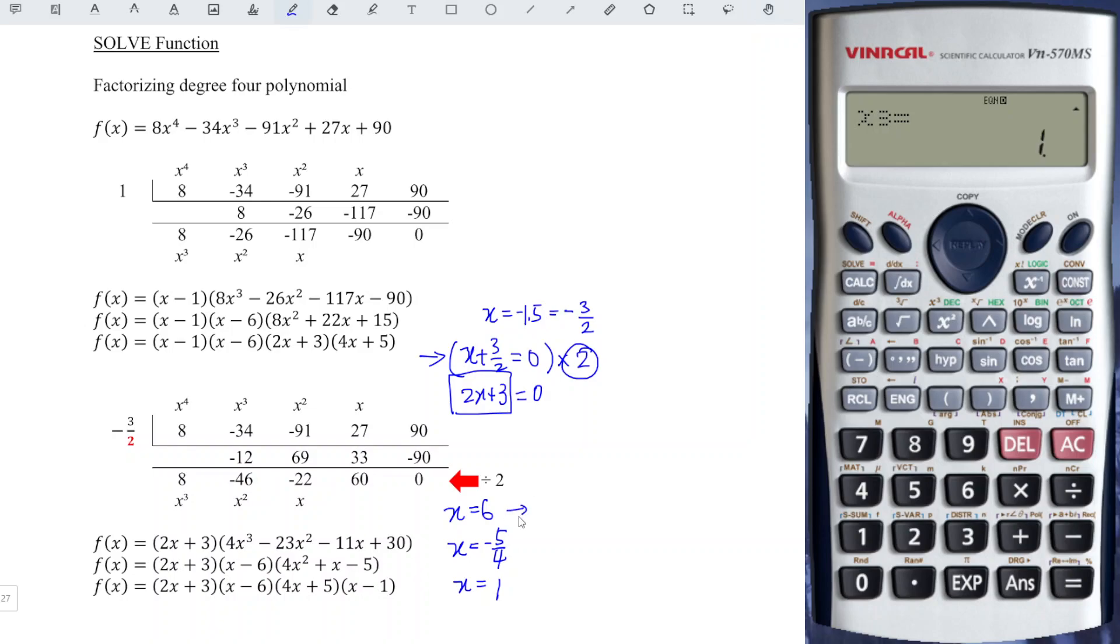So we rearrange. This is supposed to be x minus 6 equal to zero. And this is 4x plus 5 equal to zero. And x minus 1 equal to zero. We just have to expand this one. And we obtain the degree 2 polynomial.